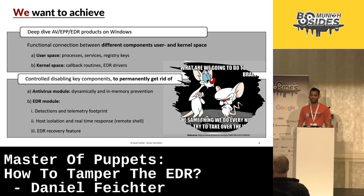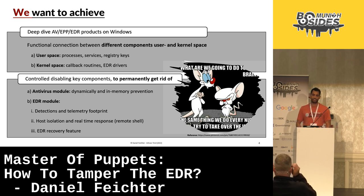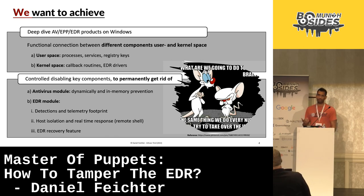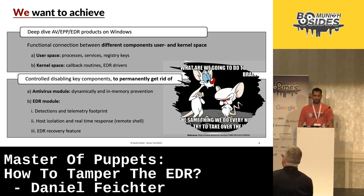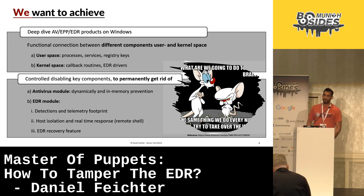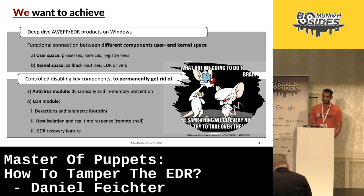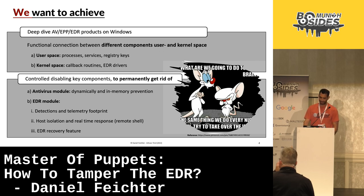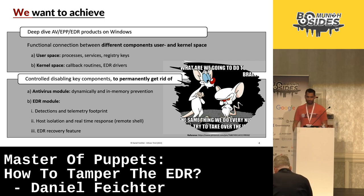This is my personal research and personal experience, and the shown strategy applies to multiple products on Windows. In the first step, we try to get a better understanding of the different components from EDRs in user space and kernel space. In the second step, we use that knowledge to find the key element to permanently disable the main functionality from an EDR — permanently getting rid of prevention, detections, telemetry footprint, host isolation, real-time response, and the EDR sensor recovery feature.